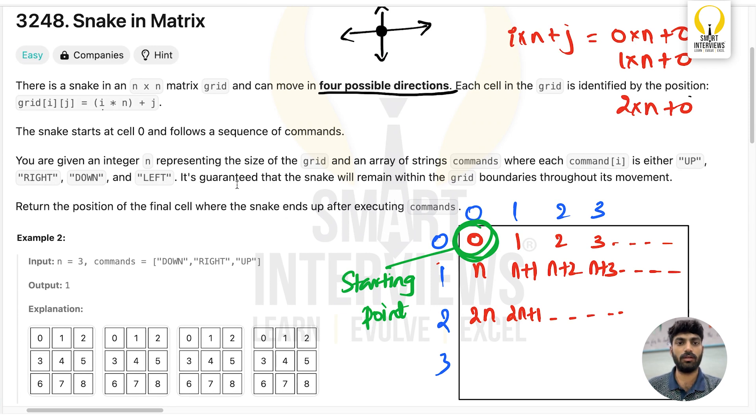It's guaranteed that the snake will remain within the grid boundaries throughout its movement. We need to return the position of the final cell where the snake ends after executing all the commands. The question is very simple and straightforward. You'll be given a value n followed by a commands array.